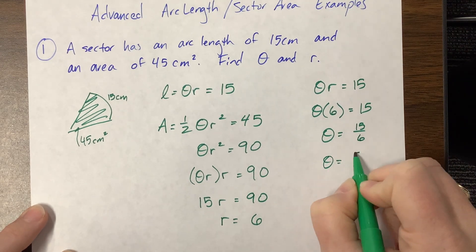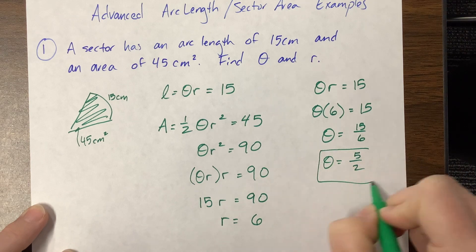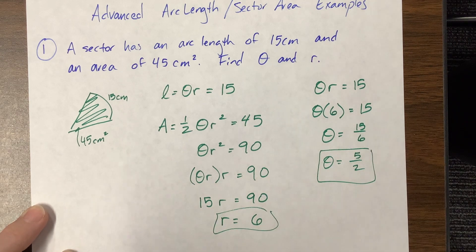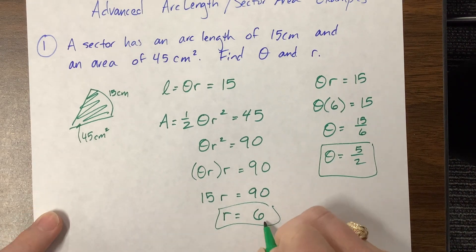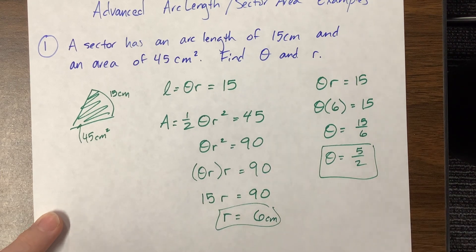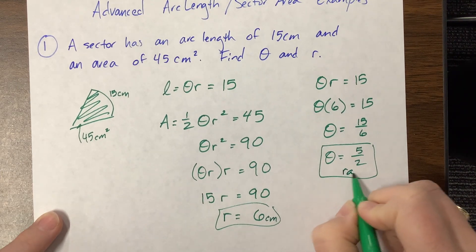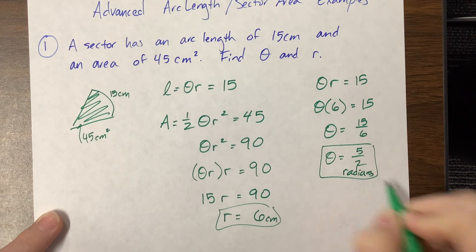3 goes in here, 5, 3 goes in there too, and these are my units. The radius would be in terms of centimeters and the angle is in terms of radians. Fantastic.